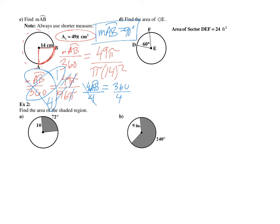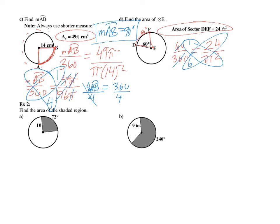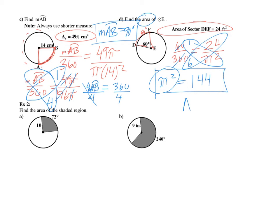Find the area of circle E. The arc measure is 60 degrees, so we set up 60 over 360 equal to the area of the sector, which is 24, over the total area pi r squared. Simplifying 60 over 360 gives one-sixth. Cross-multiplying: pi r squared equals 6 times 24, which is 144. Since pi r squared is the area of a circle, the area equals 144 feet squared.